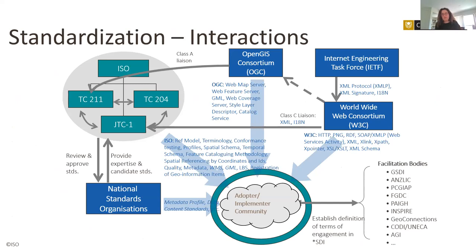This graph shows the synergies between various organizations in standardization. There are different types of liaisons, and a Class A liaison between OGC and ISO TC 211 means that whatever topic is standardized within ISO TC 211 will not be redundantly standardized at OGC — OGC adopts that standard within their set, and vice versa. For instance, standards such as Web Map Service and Web Feature Service have been defined by OGC and adopted within the ISO 19100 series.